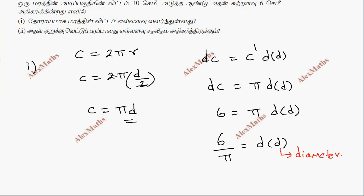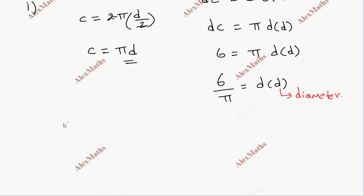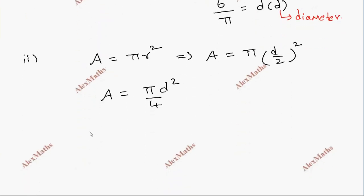The second subdivision: what is the percentage increase in the area? So the percentage increase in the area — we have the formula. Area equals πr squared, but in terms of diameter, r equals d divided by 2, so the area becomes π times d-squared divided by 4, which is π by 4 times d squared.